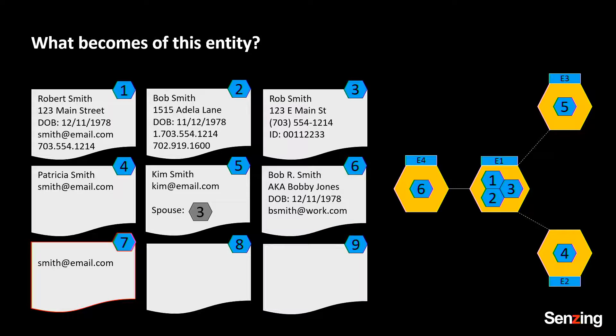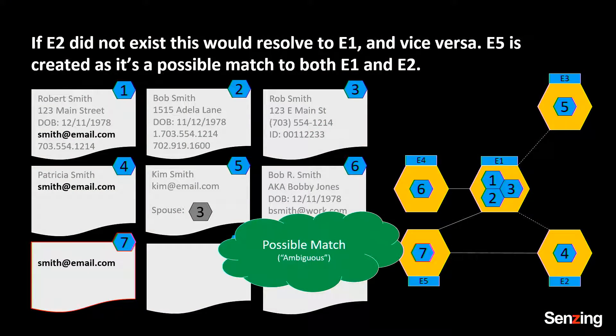This one here we've struggled with for years. Only recently did we figure out how to solve it at scale. What would you do with this record? It shares the email address from one and four. Now imagine this: what if this record came with a piece of information that said 'shoot on sight'? You don't want to arbitrarily give this to record one or four. We used to arbitrarily bind this to one or the other. What we do now is keep it out and call it ambiguous. If entity E1 didn't exist, you could be very sure it was E2. And if E2 didn't exist, you could be sure it was E1. But in the evidence of both, you have to pull it out.